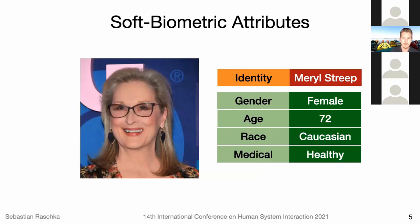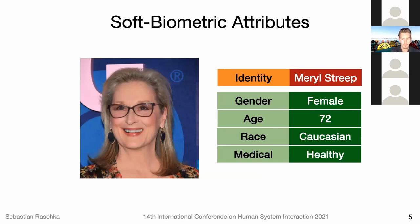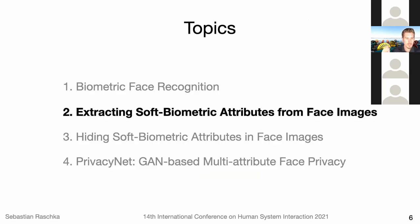I briefly talked about soft biometric attributes that one can extract from face images. Some face recognition systems use this soft biometric information explicitly — for instance, you can have a gender classifier extract the gender and attach it together with the face image for a classifier to match both the face in the picture and the face of a person in front of the camera, and also check whether the gender is the same as an additional way of verifying people. Now I want to talk about how easy it actually is to extract such soft biometric information, and then we'll discuss hiding this information.